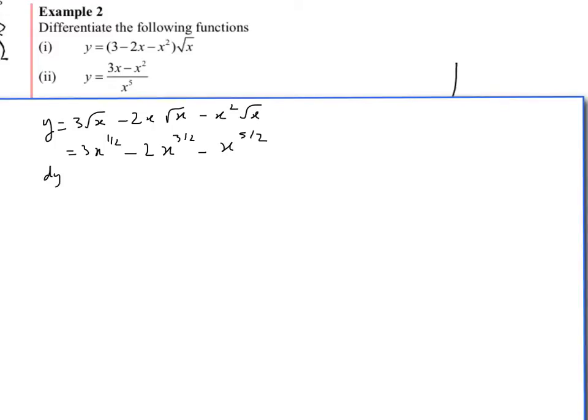And when we differentiate it, we've got 3/2, bring the power down, take 1 away from the power, minus 6/2, which is 3. And take 1 away from the power, so that becomes 1/2. Again, bring the power down, which is 2.5, take 1 away from the power, which is 1.5, so we'll put 1/2 there. And we can tidy this up.